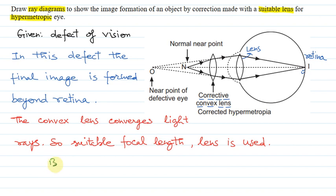By using convex lens of suitable focal length, the rays converge and image is formed on the retina.